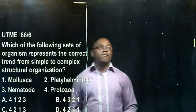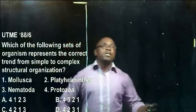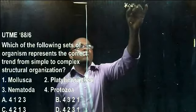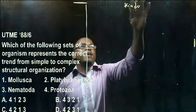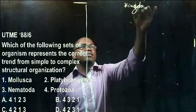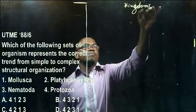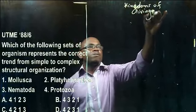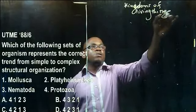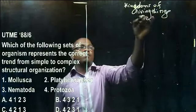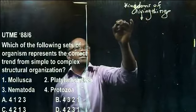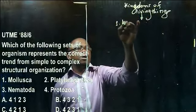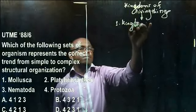Now, for us to get this evolutionary trend, you must understand that we have five kingdoms of living things. They follow an evolutionary order. The first kingdom of living things is Kingdom Monera. This must always come first.